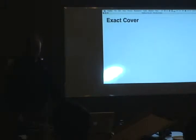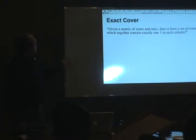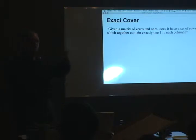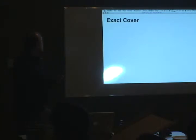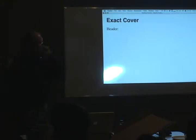Here's the exact cover problem. Given a matrix of zeros and ones, does the matrix contain a set of rows which together contain exactly one 1 in each column? It's a sparse matrix of zeros and ones. You want to find a set of rows which, when combined, have ones all across but no twos and no zeros. To find every solution, you must find all such sets of rows. The trick is to construct a matrix that corresponds to the puzzle — you name the columns after the names of the pieces, and also the coordinates of the space you're trying to fill.